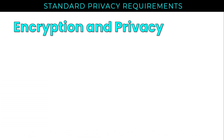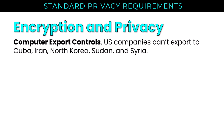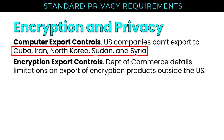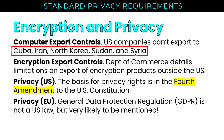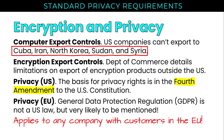A couple of high-level concepts worth mentioning: U.S. companies can't export certain computer tech to rogue nations like Cuba, Iran, North Korea, Sudan, and Syria. The Department of Commerce also details limitations on export of encryption products. The basis for privacy rights in the U.S. is the Fourth Amendment. GDPR is likely to appear multiple times on the exam — it's the gold standard for privacy protections and applies to any company with customers in the EU, regardless of where that company is based.